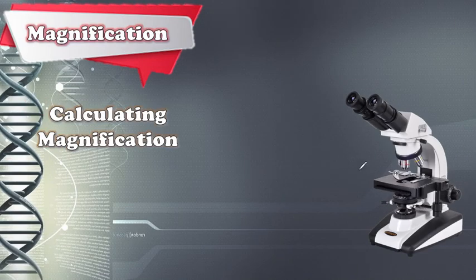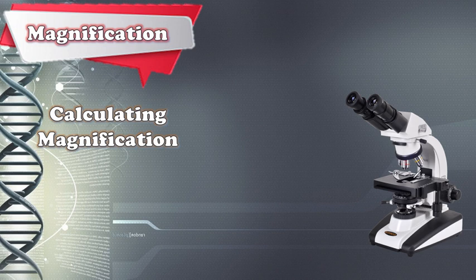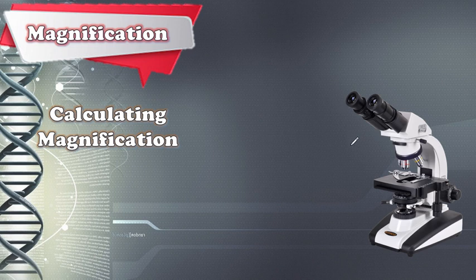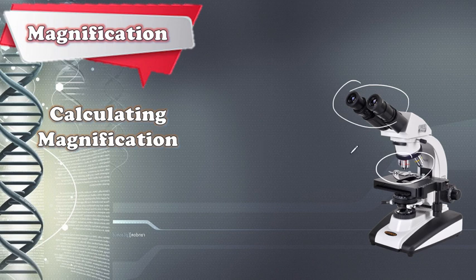We use a microscope to do this. This is a light microscope. We can also use an electron microscope, which is much more powerful. If we want to know the magnification of this microscope, we need to understand its lenses. There are two types of lenses: the eyepiece lens, which you put your eye on, and the objective lens. Some microscopes have three objective lenses, and some have only one.